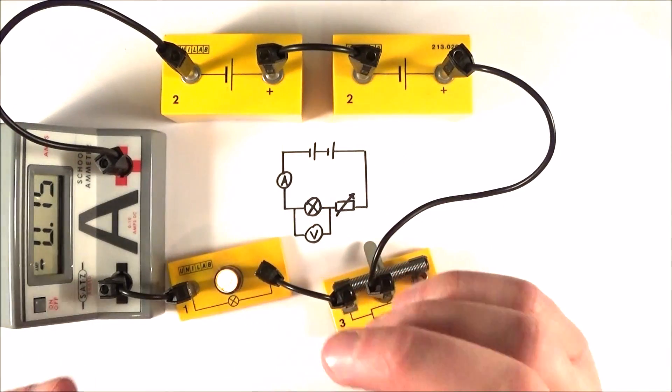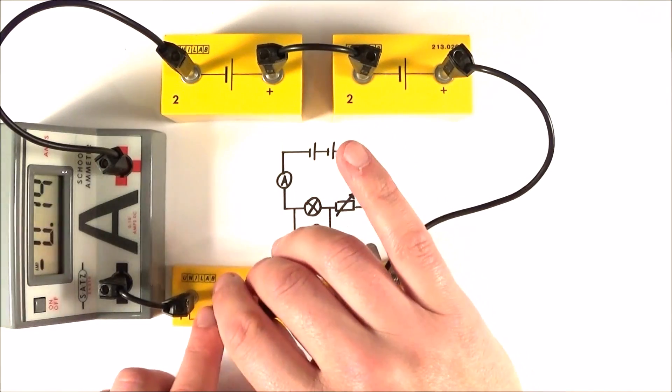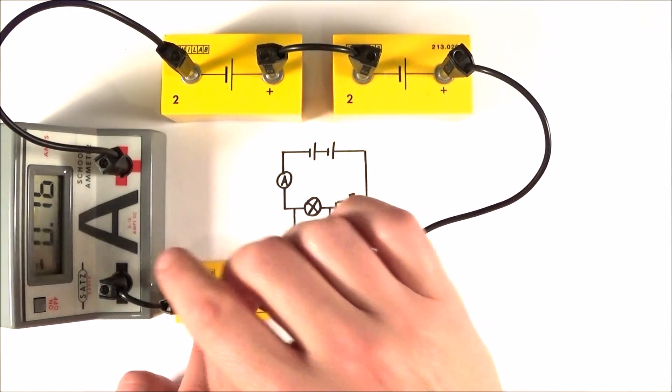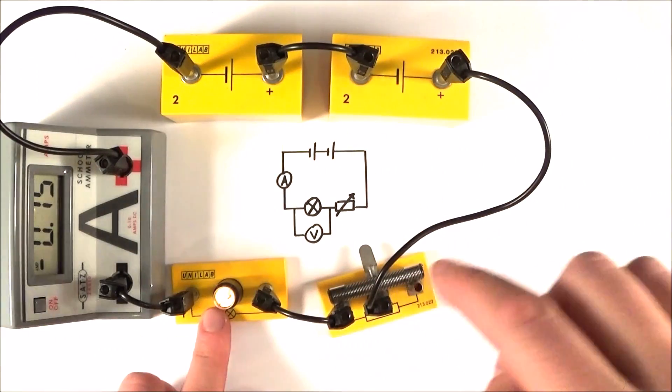So the important thing is all I'm doing is adding one component at a time and checking that everything is still working. And what I have is a value of 0.15 or 0.16 amps. We can see that we've now got current flowing around the circuit.